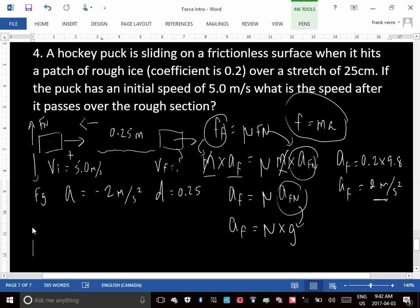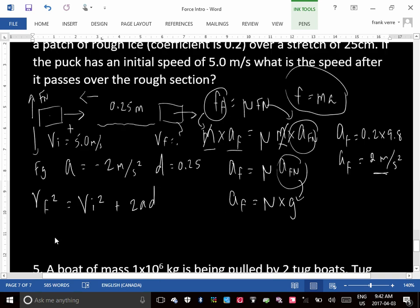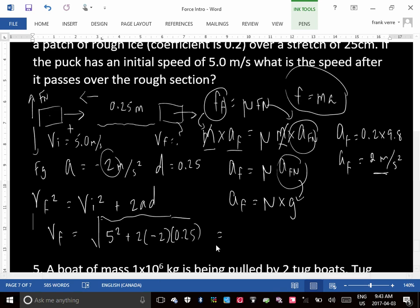I would use that one. Okay, so let's solve for vf. vf then would be the square root of vi squared, which is what? Vi was 5 squared plus 2 times negative 2 times the distance, which is 0.25. So that 5 squared is 25. And then we have 4 times 0.25, which is 1. So it's the square root of 24, which is 4.9. So the answer is 4.9.